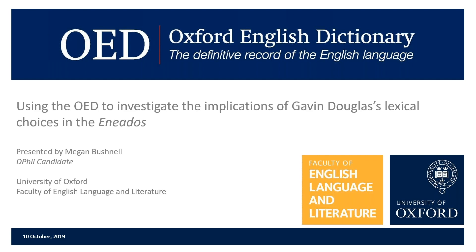Thank you very much, Simone. Hello everyone. My name is Megan Bushnell and I'm a DPhil student at the University of Oxford in the English faculty. I work on Gavin Douglas and his translation of the Aeneid, known as the Eniados. I would like to thank both the Oxford English faculty and the OED, and also James McCracken, my colleague at the OED, who helped me on this project.